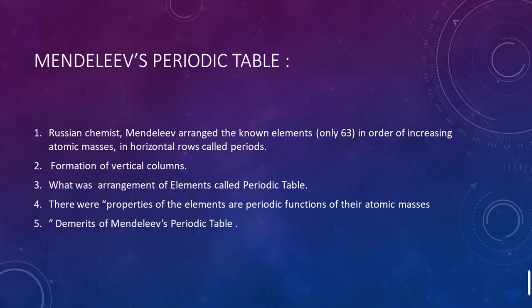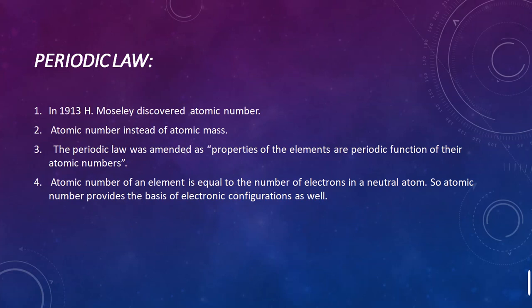The final improvement was made by H. Moseley in 1913. He discovered that elements should be classified on the basis of atomic numbers, not atomic masses. He observed that the atomic number, not the atomic mass, should determine the position of elements in the periodic table. The amended Periodic Law states that the properties of elements are a periodic function of their atomic numbers.